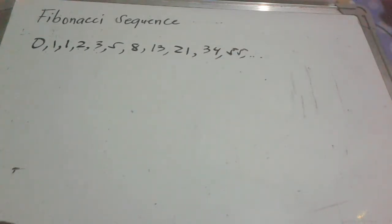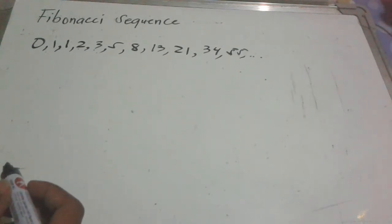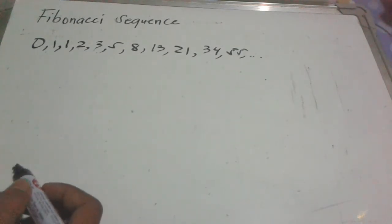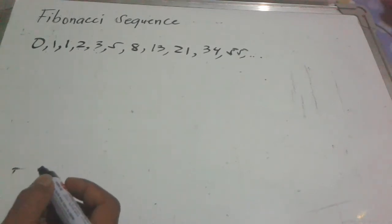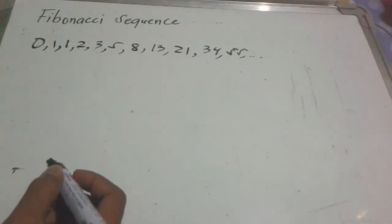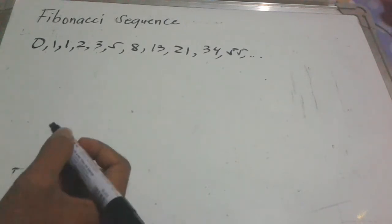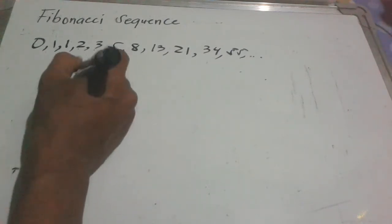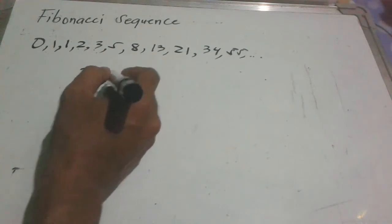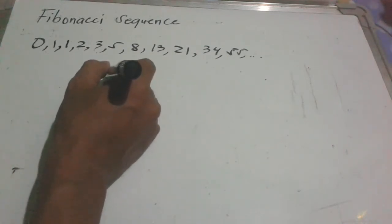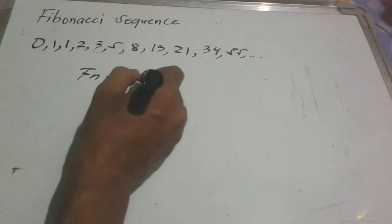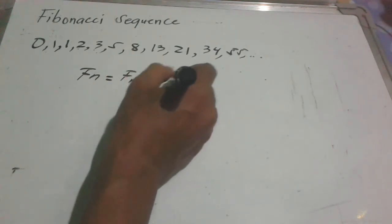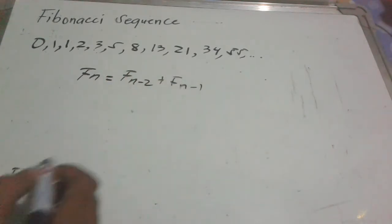That's how it works. There is also a formula used here to get the number of terms. The formula used is F sub n is equal to F sub (n minus 2) plus F sub (n minus 1).